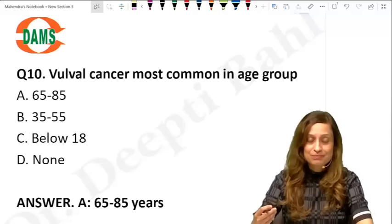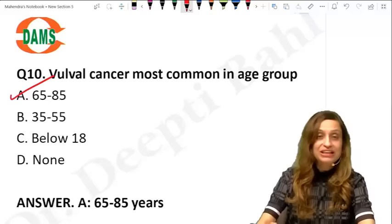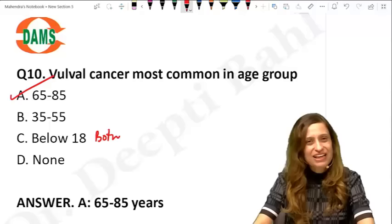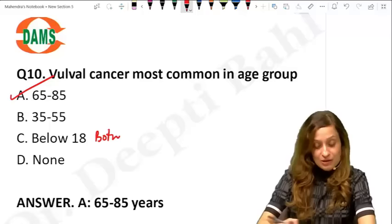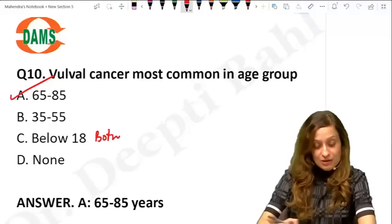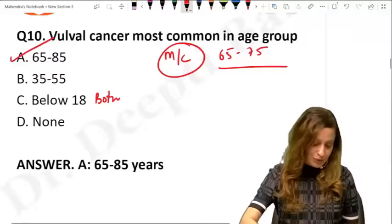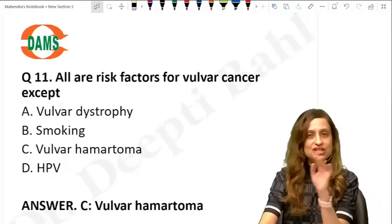Vulval cancer most common age group: advancing age is the risk factor. The best answer is 65 to 85 years. Most commonly, if asked about the peak age group, it is between 65 to 75 years of age. As age increases, the incidence of vulvar cancer increases.